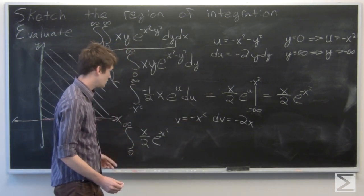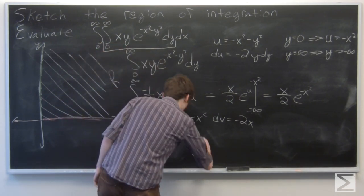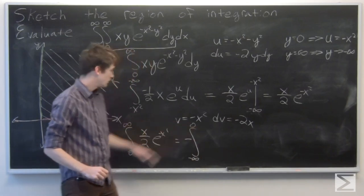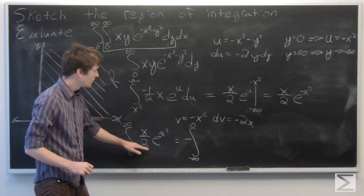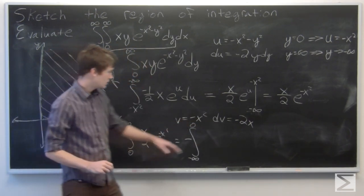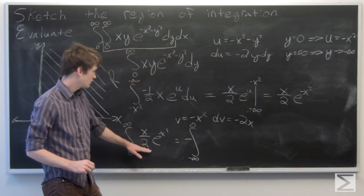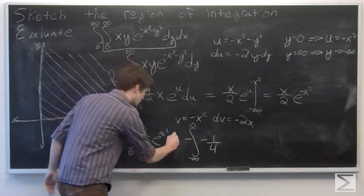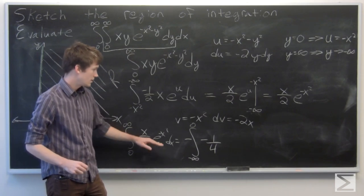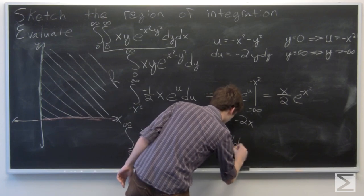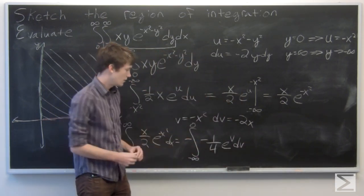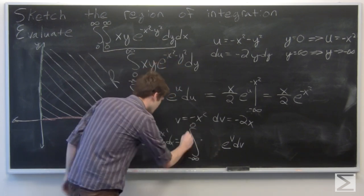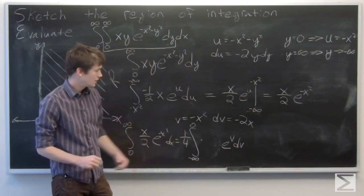We reverse the order of integration and negate, giving the negation of the integral from negative infinity to 0. Substituting in v and dv — since dv is negative 2x dx — we write negative one-fourth times e to the v dv. Reversing again, the two negatives give positive one-fourth, so we have one-fourth times the integral from negative infinity to 0 of e to the v dv.